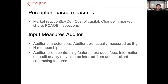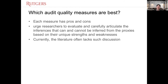We have another measure called input-based measures. We can use auditor characteristics such as auditor size — whether they're a Big Four or not — or we could use auditor-client contract features, like audit fee as a proxy for audit quality. So we have a lot of proxies to measure audit quality. Which one is the best? The answer is always that each measure has pros and cons, and the paper deals with that in specific detail.